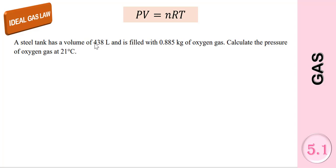We have a steel tank with a volume of 438 liters filled with 0.885 kilograms of oxygen gas. Calculate the pressure of the oxygen gas at 21 degrees Celsius.